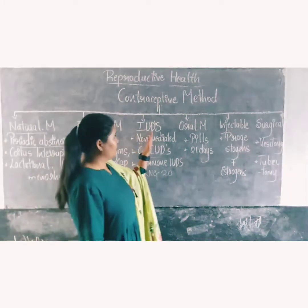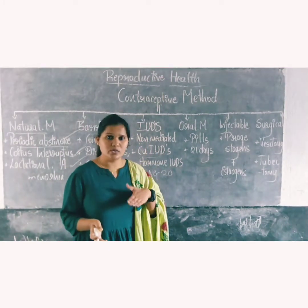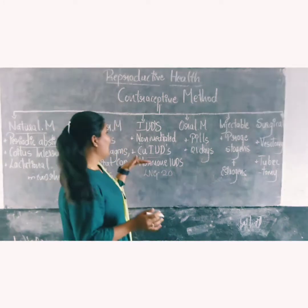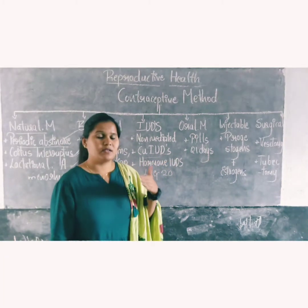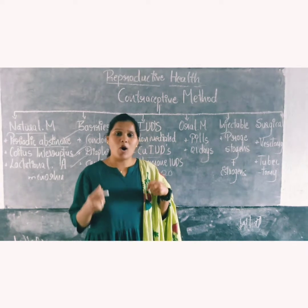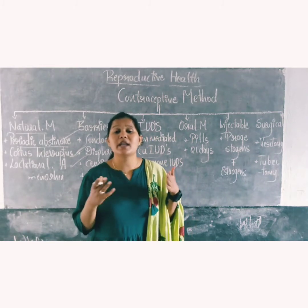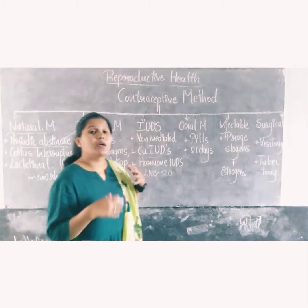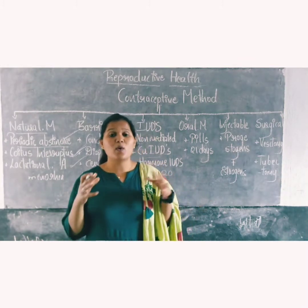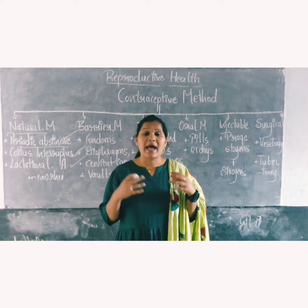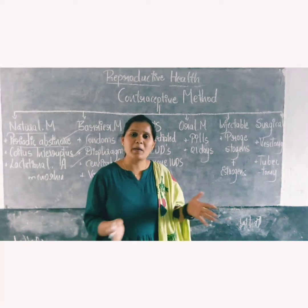Coming to IUDs — intrauterine devices. Non-medicated devices are used to prevent unwanted pregnancy. The next type is copper IUDs, which are copper intrauterine devices — copper-releasing devices like Copper-7, Copper-T, and Multiload-375. Please check your textbook for the names of those. When copper is released, it suppresses the motility of the sperm and also the ability of the sperm to fertilize the egg, thereby preventing unwanted pregnancy.